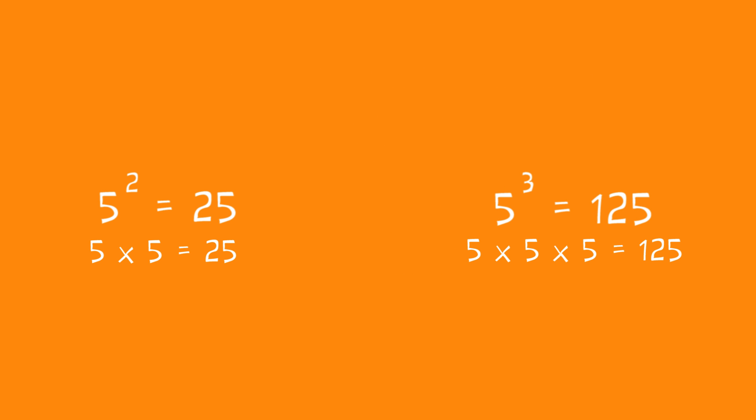Some indices have special names. When you multiply any number by itself, mathematicians often say you have squared that number. So, 5 squared equals 25. Similarly, 5 cubed, or 5 to the power of 3, is 125.